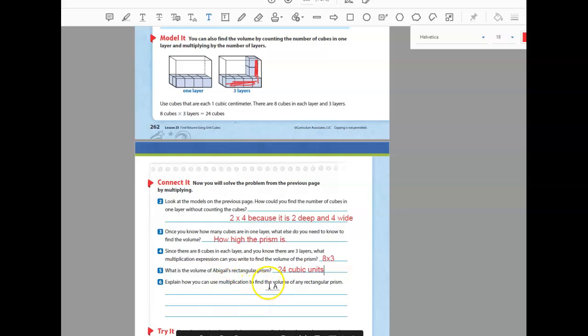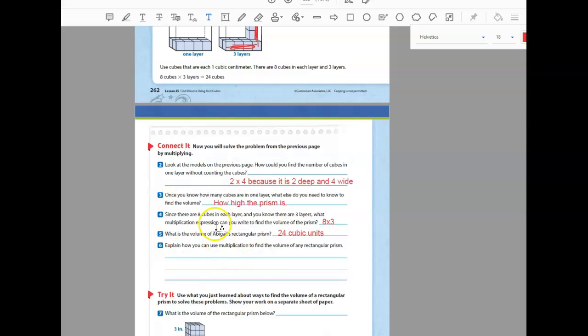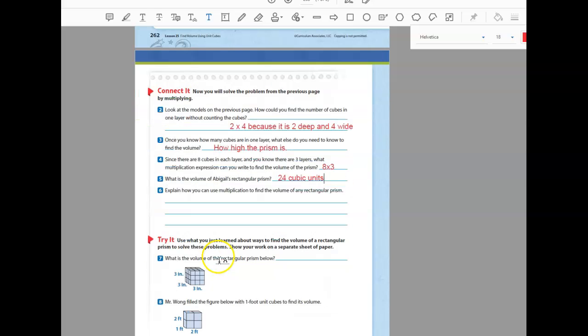Explain how you can use multiplication to find the volume of any rectangular prism. It's the same thing. We multiply the three numbers. Number seven, what is the volume of this? You would do three times three times three. Three times three is nine. So many people want to add those together, but now I've got nine times three, which equals 27.